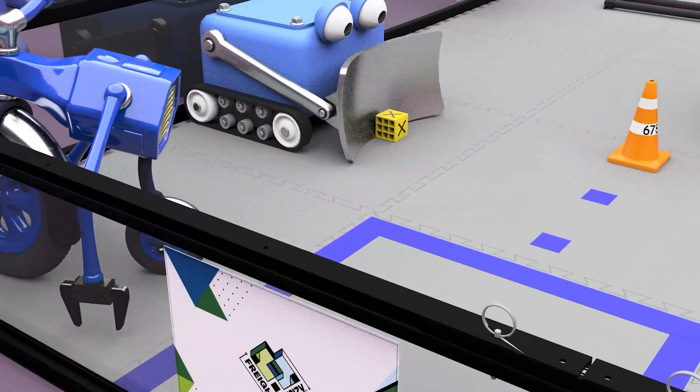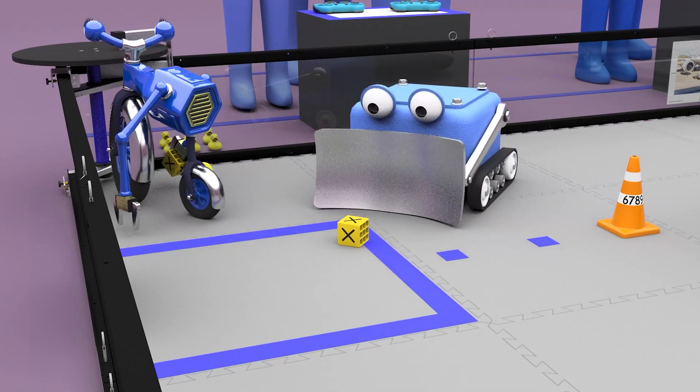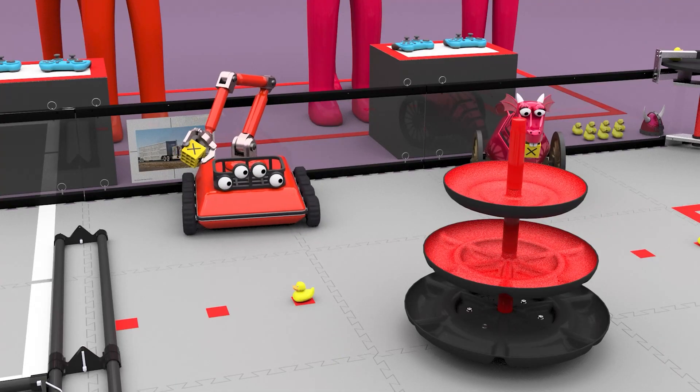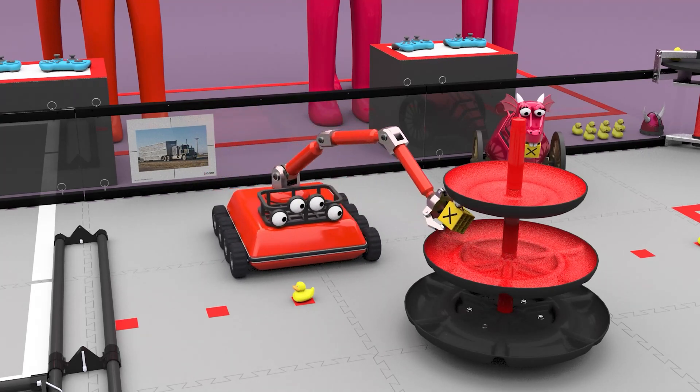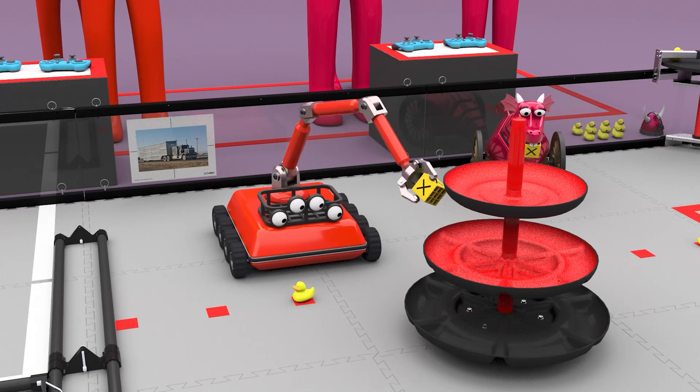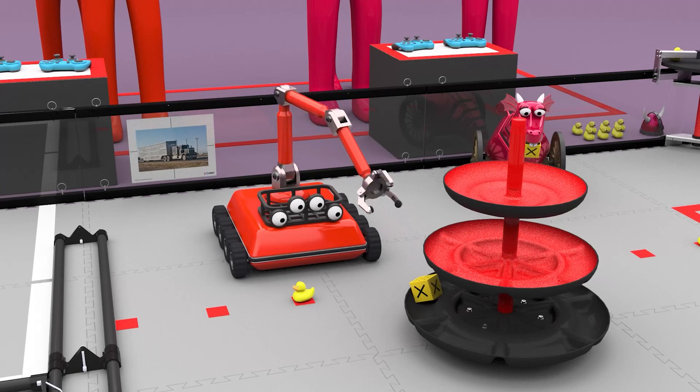Each piece of freight delivered to the alliance's storage unit will earn two points. Each pre-loaded box placed on an alliance's shipping hub earns six points, but there are ways to earn bonus points. If the box is placed on the correct level, as indicated by the duck's location on the barcode, the alliance earns a 10-point bonus.